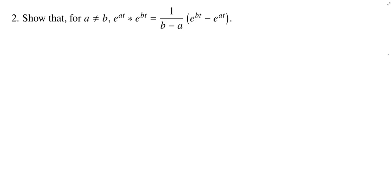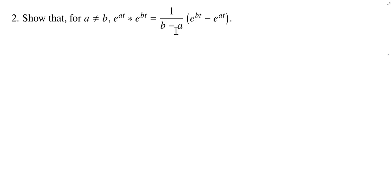Here we're given two exponential functions, and we're assuming the exponents are not the same. So this a not equal to b is going to be important, of course, because if this formula is true and a was equal to b, well, we would be kicking a puppy, and we don't kick puppies here.